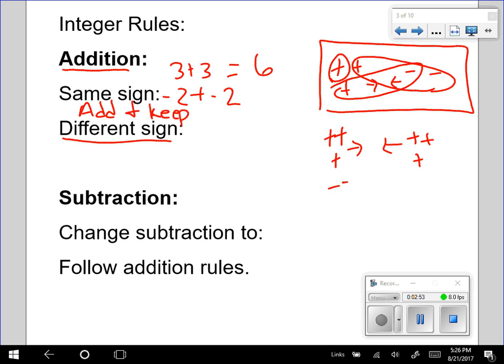If I have 2 negatives and they're coming together but they're on the same team, why would they fight each other? I'm going to use same sign, add and keep. I would have 4 negatives. So either way you learned it, it doesn't really matter. The rule is the same.